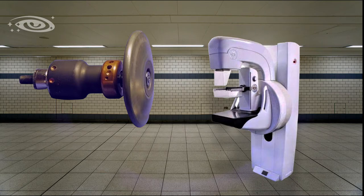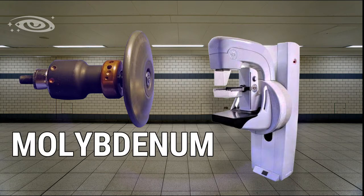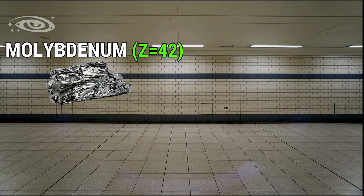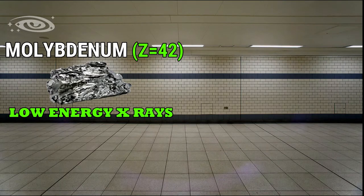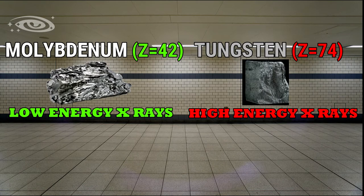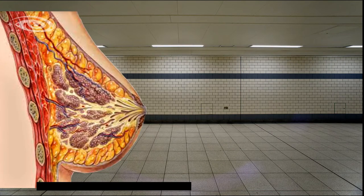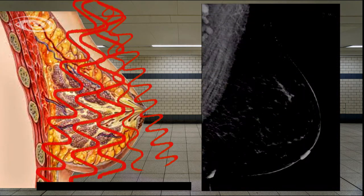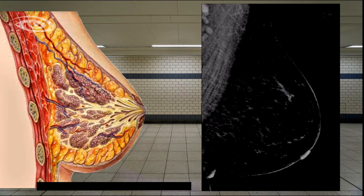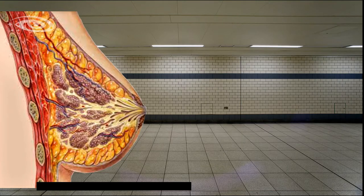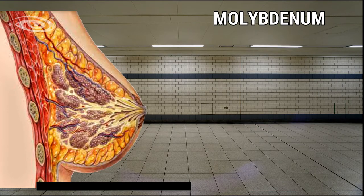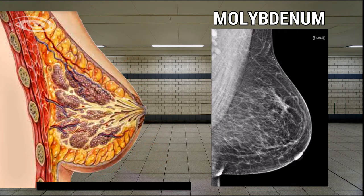But one thing in mammography machines, the target disc is not tungsten, the target disc is made up of molybdenum. Because molybdenum produces low energy X-rays. But tungsten produces high energy X-rays. The breast tissues are soft tissue, so if you use high penetrating X-rays, we cannot get details on the image. The image is going to be overexposed. So we need low energy X-rays, so molybdenum is suitable for producing low energy X-rays.